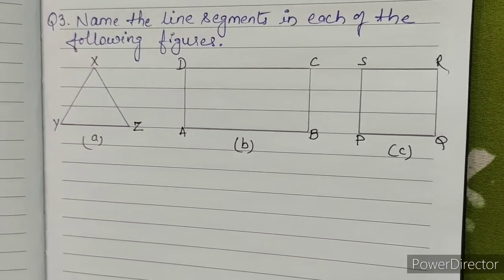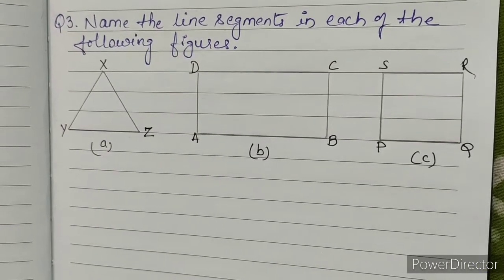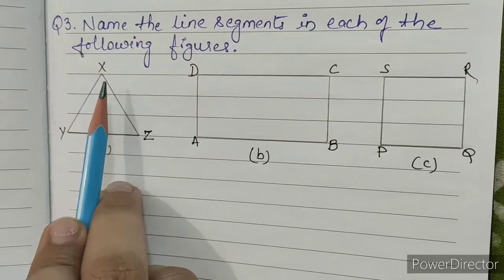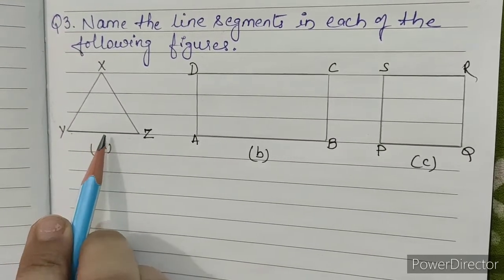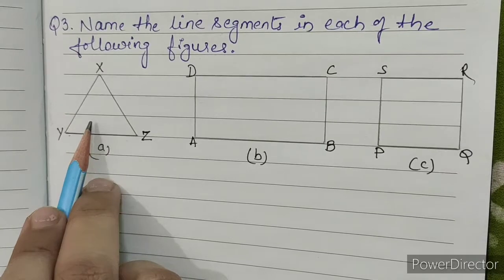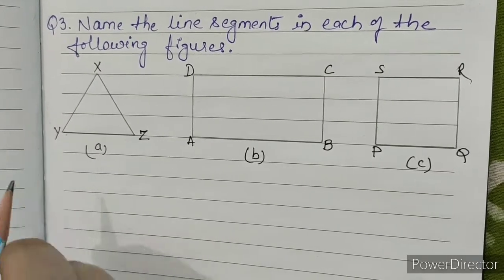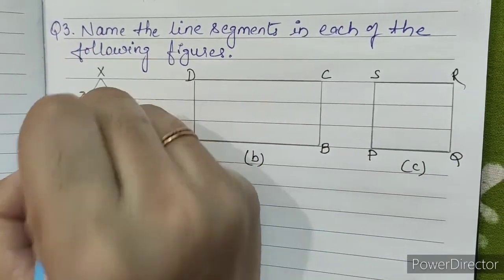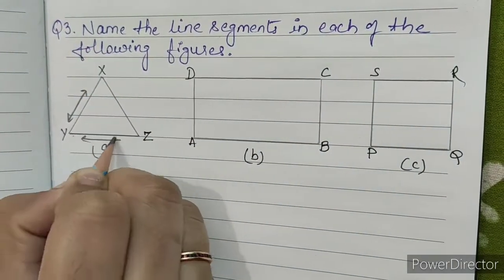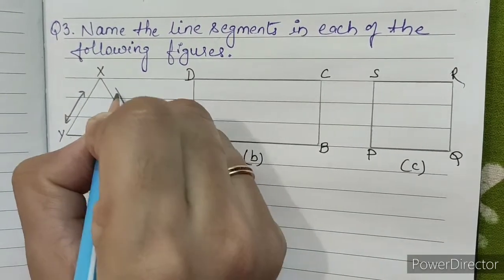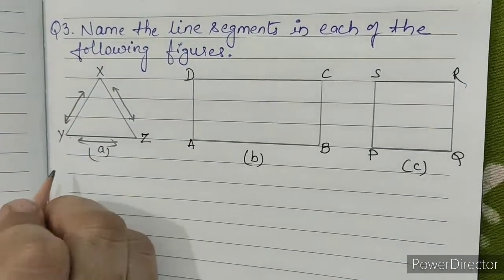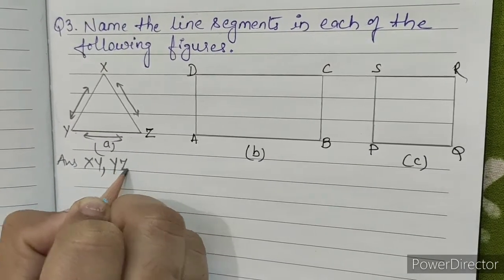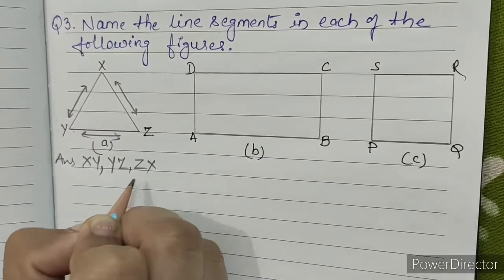Question number 3: name the line segments in each of the following figures. This is triangle XYZ. In this question we have to write the name of line segments. We can see XY, YZ and ZX. So our answer is XY, YZ and ZX.